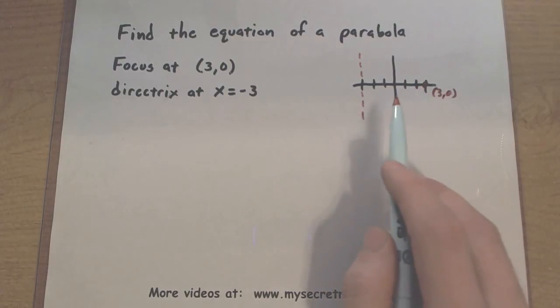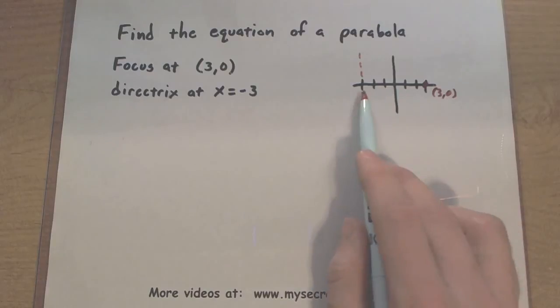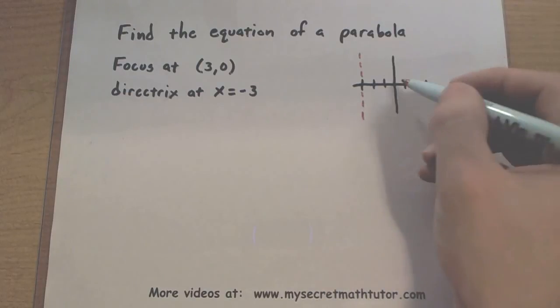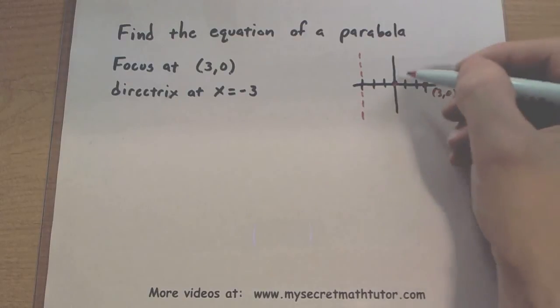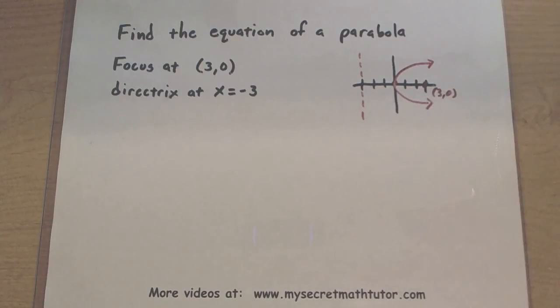Now, I know where the vertex is as well, because the vertex is halfway between the focus and the directrix. So my vertex of that parabola is actually at 0, 0. So this rough sketch will give me a good idea of where that parabola is headed.